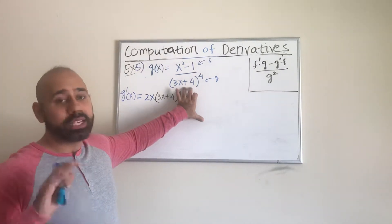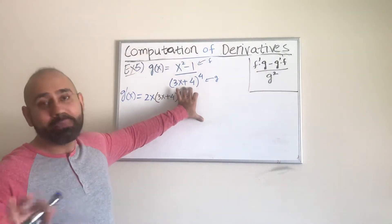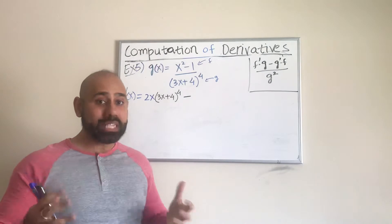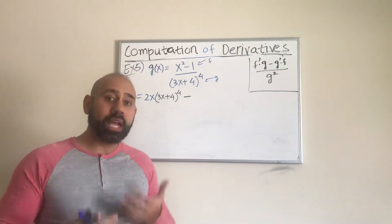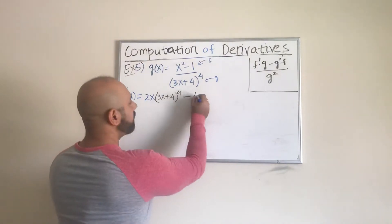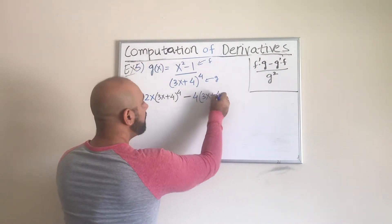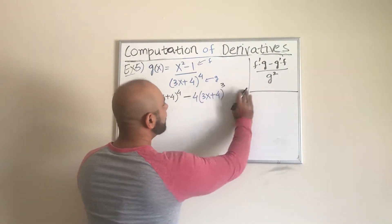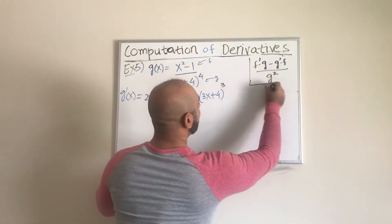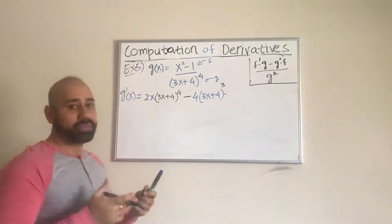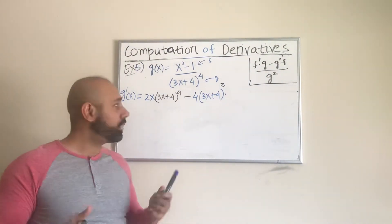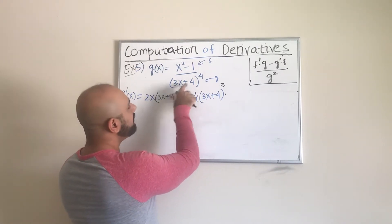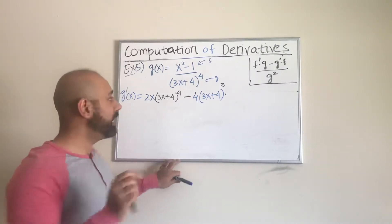How do we use the chain rule? Let's keep it simple. We consider the whole thing inside the parentheses as just a big x to the power 4. Using the power rule, we bring the 4 up front and then we have (3x + 4) raised to the power 3 — that's 4 minus 1. But we cannot stop there: we still have to multiply by the derivative of the inner function. The derivative of 3x is 3 and the derivative of 4 is 0, so we just multiply by 3.